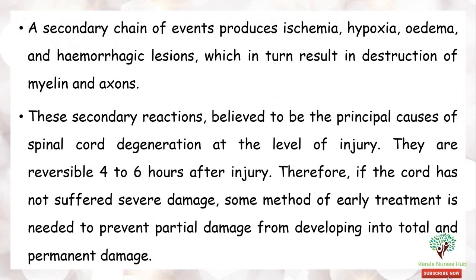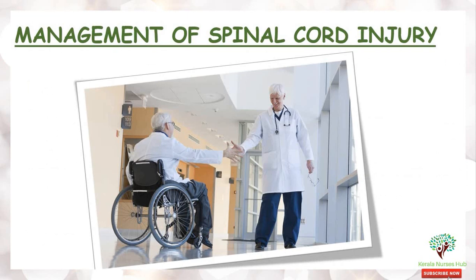A secondary chain of events produces ischemia, hypoxemia, edema, and hemorrhagic lesions, which in turn result in destruction of the myelin and axons. These secondary reactions are considered the principal cause of spinal cord degeneration at the level of injury. They are reversible four to six hours after injury. Therefore, if the cord has not suffered severe damage, early treatment is needed to prevent partial damage from developing into total and permanent damage.